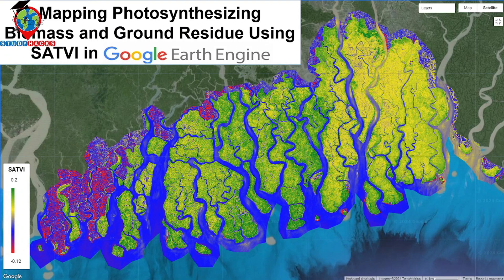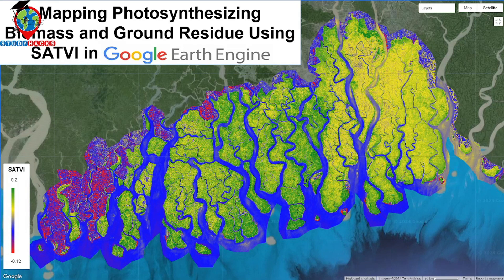Hello everyone, welcome to the Study Facts Institute of GIS and Sensing. Today I will discuss a very important topic: how we can easily map photosynthesizing biomass and ground residues using the Soil Adjusted Total Vegetation Index in Google Earth Engine. I will explain all of these things step by step, so after completing this tutorial you will be able to do this mapping yourself.